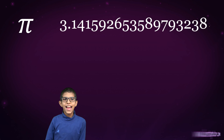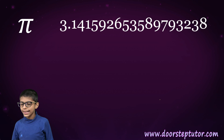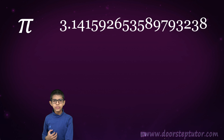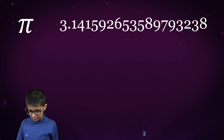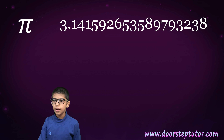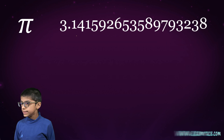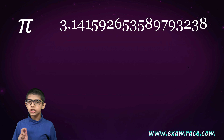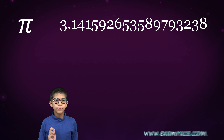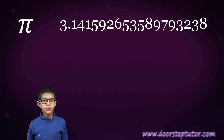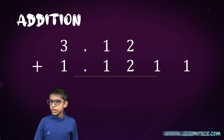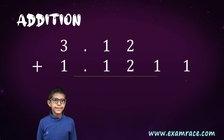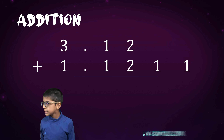Therefore, this gives us the approximate value of pi, which is 3.14159265358. Here you should know ten decimal places of pi.